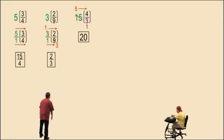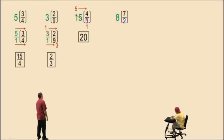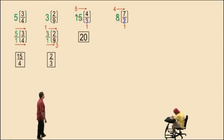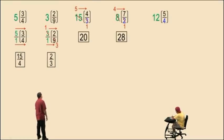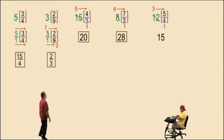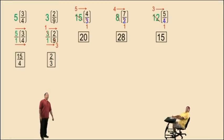Let's do another one: eight times seven-halves. Eight divided by two is four, and four times seven is twenty-eight. Next, twelve times five-fourths. Charlie, how do you kung fu this? Twelve divided by four is three, three times five is fifteen. Very nice there, Charlie — that's right.